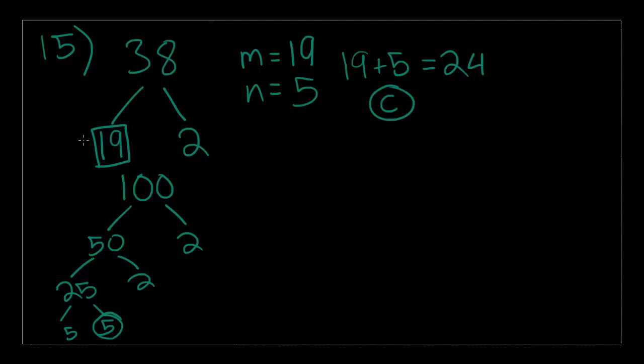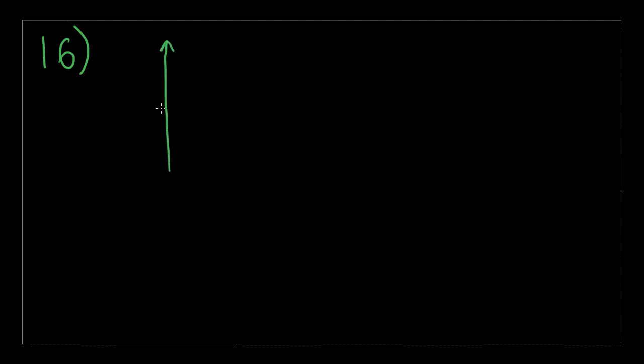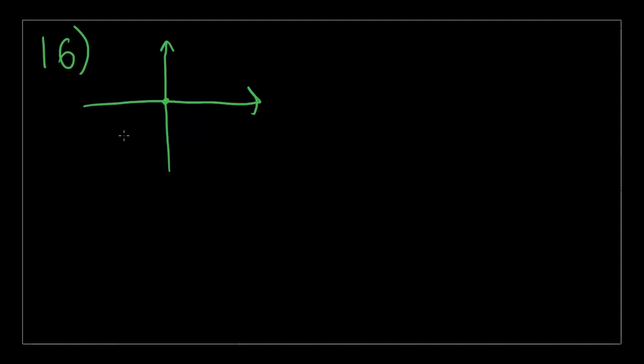We're speeding through these last problems now, just like a marathon. Of course you can still ask me questions — feel free. Number 16 says: line L has a positive slope and passes through the origin. If line K is perpendicular to line L, which of the following must be true? Let's draw a mock graph to visualize what's going on. This is the origin. Using a dark green for the main line — this is line L, which is equal to Y equals X, even though it's not explicitly stated.